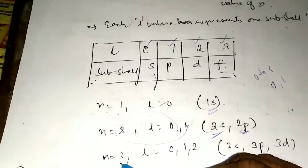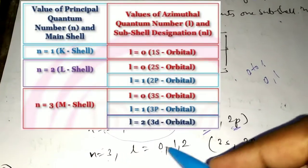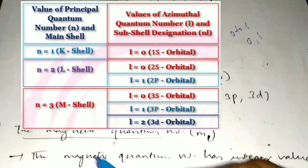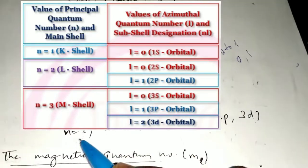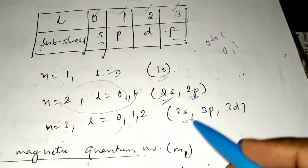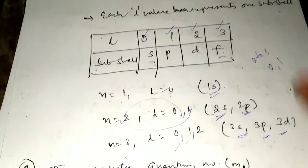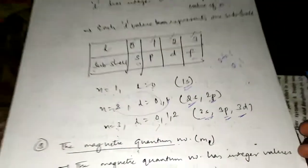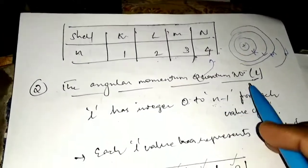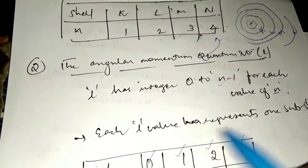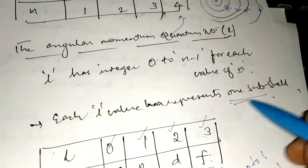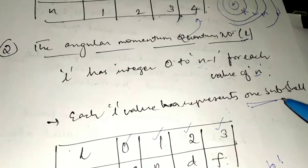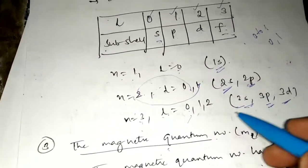Similarly, when N=3, L can be 0, 1, or 2, giving three subshells: 3S, 3P, and 3D. So when N=3, it has 3 subshells. Each L value represents one subshell. This value of L represents the number of subshells.